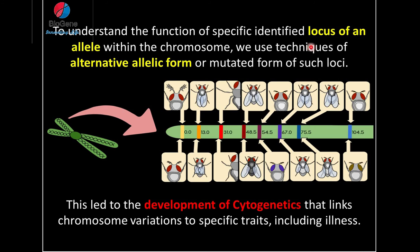To understand the function of a specific identified locus of an allele within the chromosome, we use techniques involving the alternative allelic form or mutated form of such loci. For example, if we take a gene in Drosophila and want to know that this gene regulates eye color, once we take the alternative allelic or mutated form of that eye color gene, we can easily trace the phenotypic difference — the eye color changes. This led to the development of cytogenetics, which links chromosome variation to specific traits and can also be applied to illness.